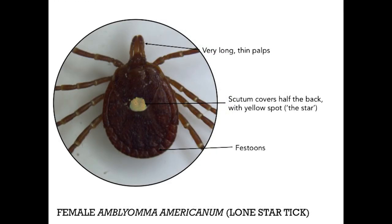This photo shows a picture of Amblyomma americanum, or the lone star tick. This tick is not native to Canada, but we do see it occasionally as it's brought in on birds. This tick provides us with a great example of very long, thin palps, and also festoons along the bottom. She is very easily recognized because of her characteristic yellow spot on the back, which is labeled the star and where she gets her name.